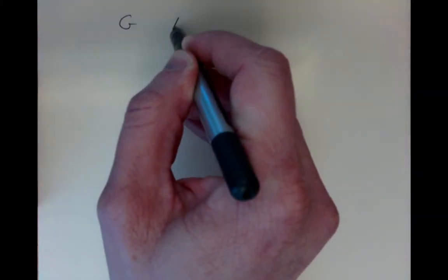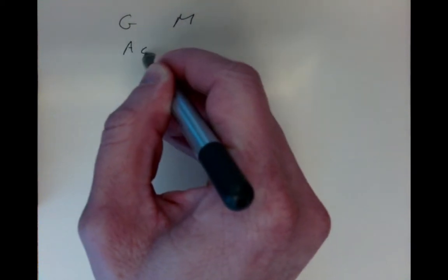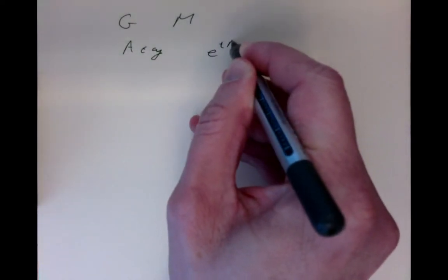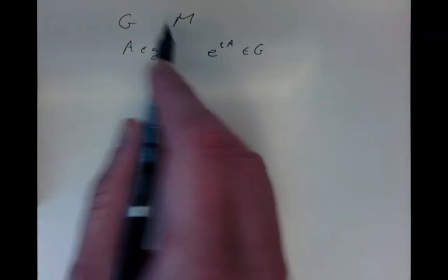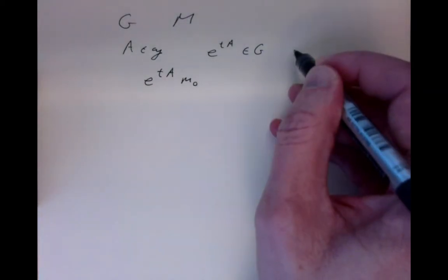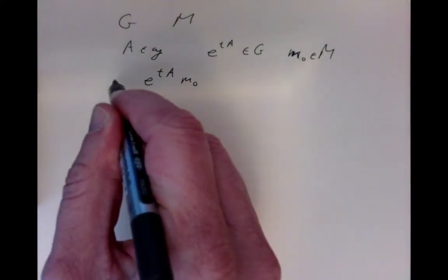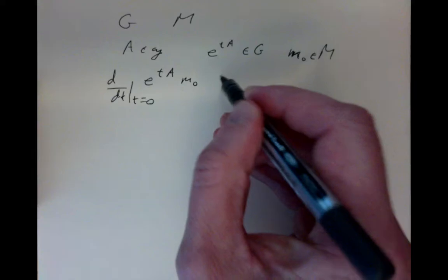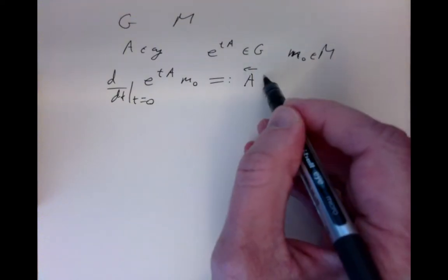Suppose we have a Lie group G acting on a manifold M. If we take any element in the Lie algebra of G and consider the associated one-parameter subgroup, since every element of G acts on M, we can consider the action on some particular point M0. We take the derivative at t equals zero of that expression to see how it moves, and we call that the vector field, evaluated at M0.